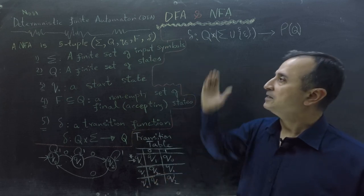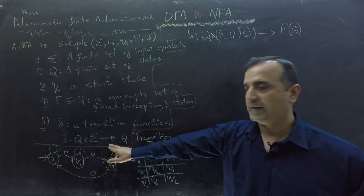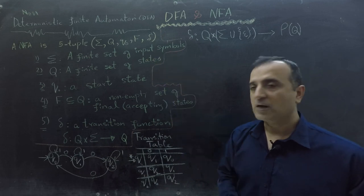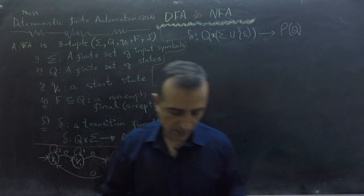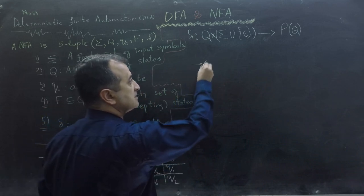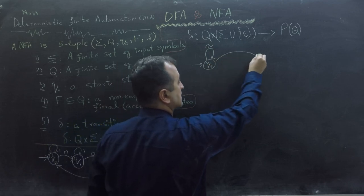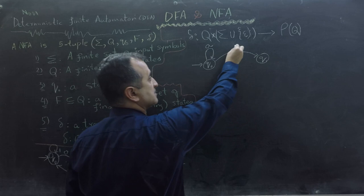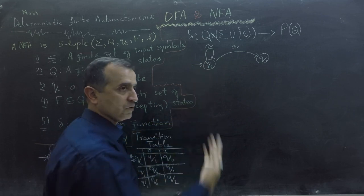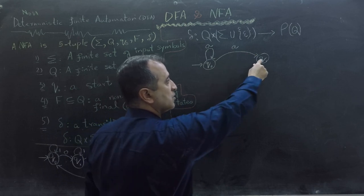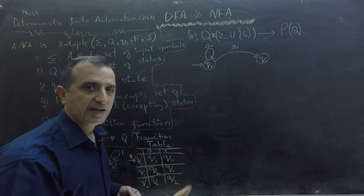How is this transition function different compared to the transition function of DFA? The transition function of DFA dictates that for every input symbol, we can go to exactly one state. However, in contrast, in case of NFA, we can take the same input — let's say A — and we can go to two different states. In this example, I take input A and can go from Q0 to Q0, and also take input A and transition to state Q1. This was not possible in DFA; in DFA, we can only go to one state via one input symbol.